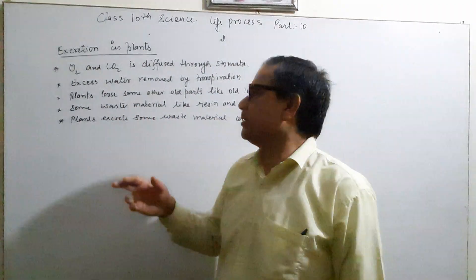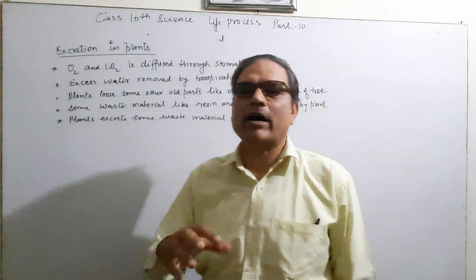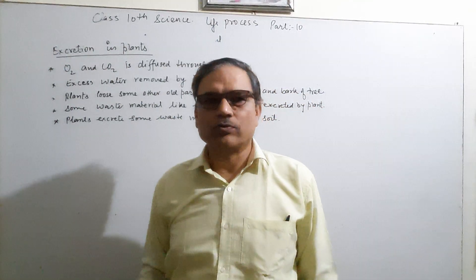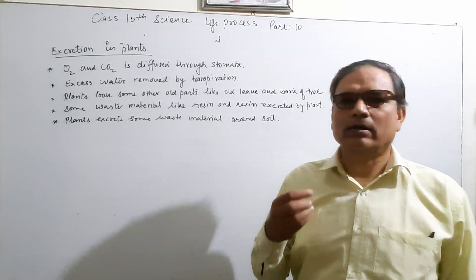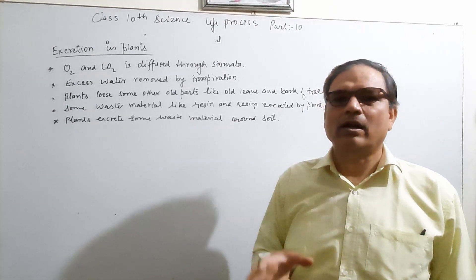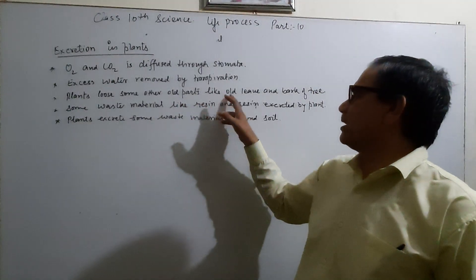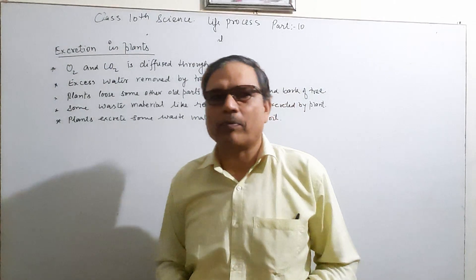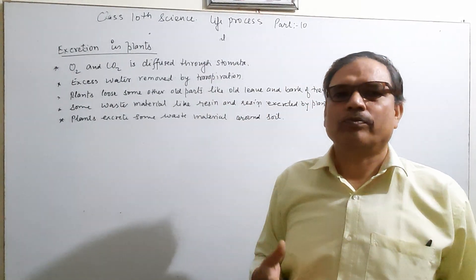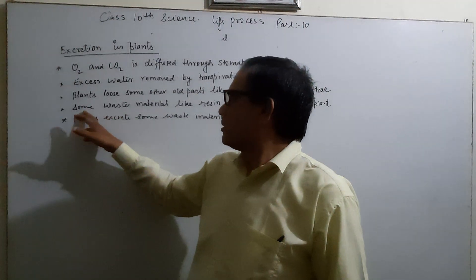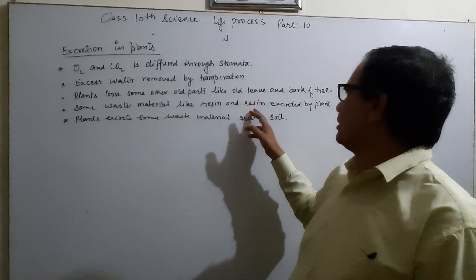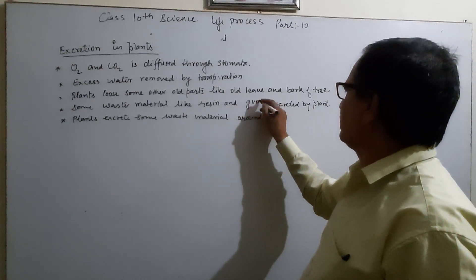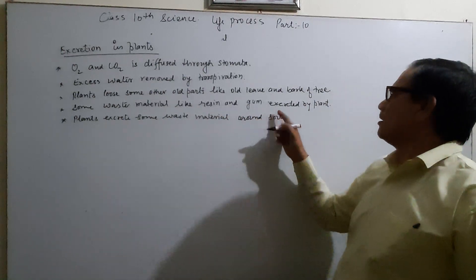Many plants lose material that is not required — old plants shed leaves, and there is falling of ripened fruits. These are waste materials according to the plant. Old leaves and the bark of the tree are excreted from the plant as they are not useful. Some waste materials like resin and gum are also excreted by the plant.